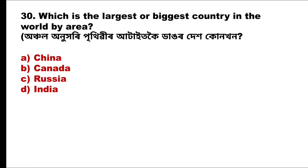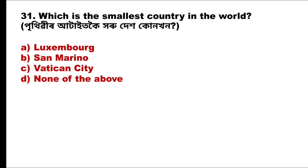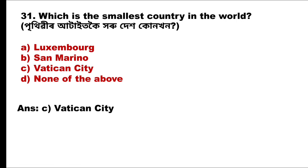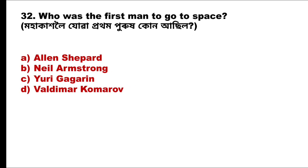Question 30: Which is the largest country in the world by area? The answer is option C, Russia. Question 31: Which is the smallest country in the world? The answer is option C, Vatican City.